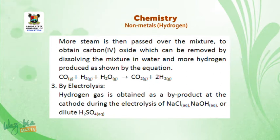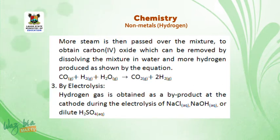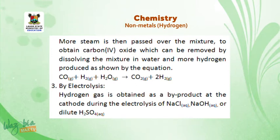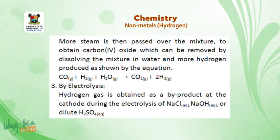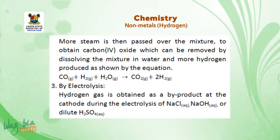Method 3 — by electrolysis: Hydrogen gas is obtained as a by-product at the cathode during the electrolysis of aqueous sodium chloride, aqueous sodium hydroxide, or dilute tetraoxosulphate(VI) acid. After this short break, we are going to look at the properties of hydrogen.